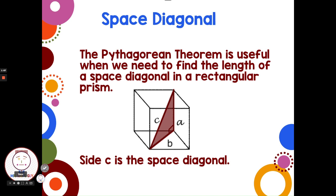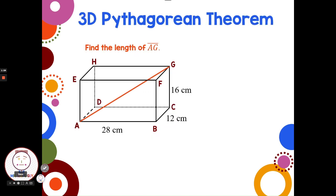The Pythagorean theorem is useful if we need to find the length of a space diagonal in a rectangular prism. You can see this right triangle we drew here with legs of a and b and a hypotenuse of c. And that hypotenuse of c is representing the space diagonal. So let's say we're asked to find the length of AG. And that's our space diagonal.